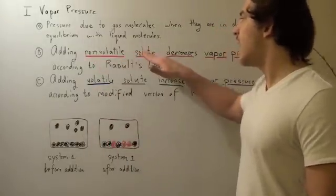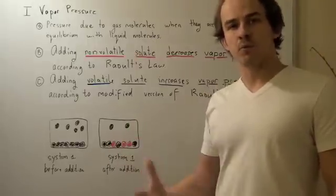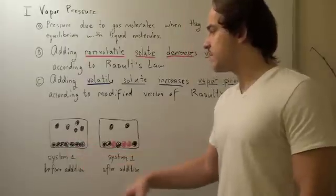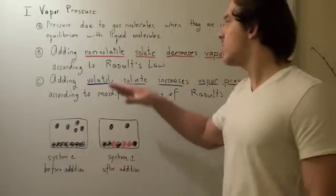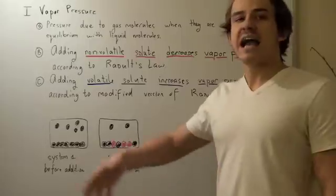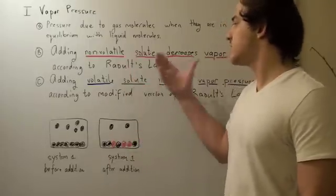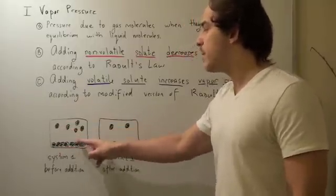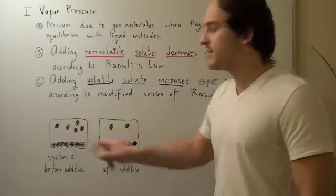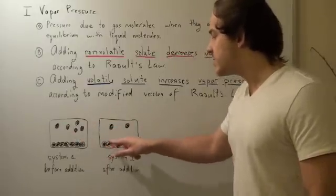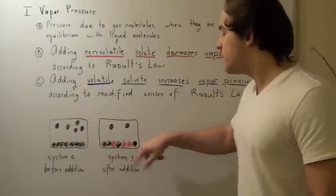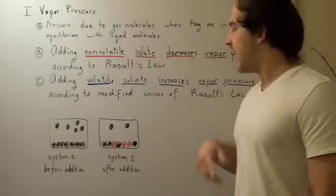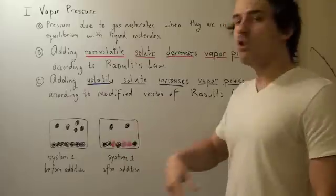A nonvolatile solute is a solute that will not evaporate. Let's look at two systems. The first system is before we add our nonvolatile solute; the second is after the addition. Before addition, a certain vapor pressure is created due to the molecules found in the space above. After addition, some of the solvent molecules will be replaced by the nonvolatile solute, so less will evaporate, and therefore the vapor pressure will be less.